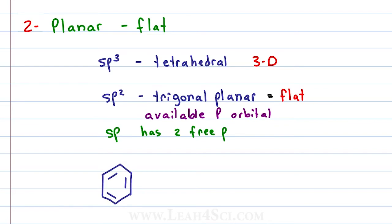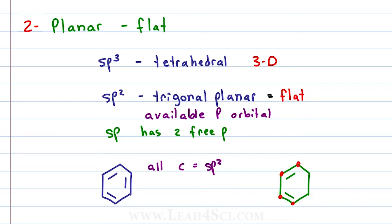Looking at benzene again, notice that every carbon atom has a pi bond, which is our clue to recognize that they are all sp2 hybridized. If I compare this to a cyclohexadiene, you'll notice that we have four sp2 carbons but we also have two sp3 carbons. These two carbons make this molecule non-planar, and that means cyclohexadiene cannot be aromatic.